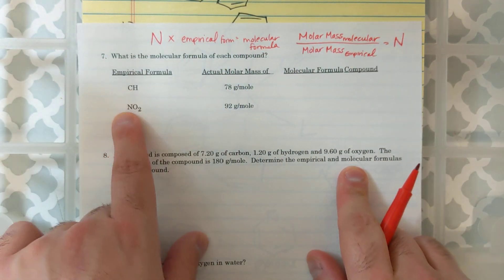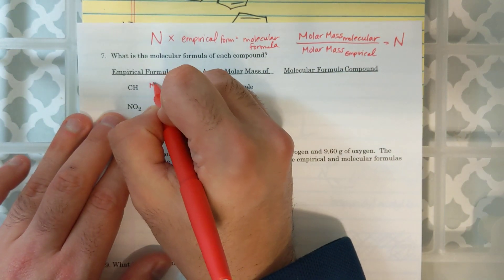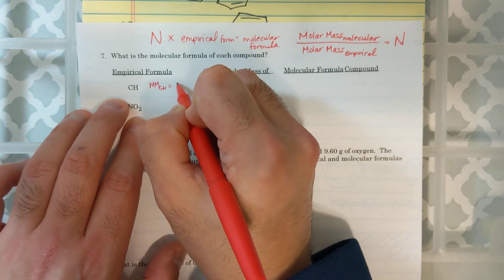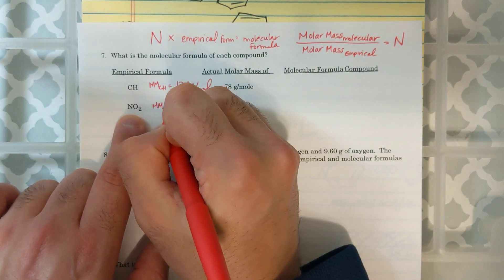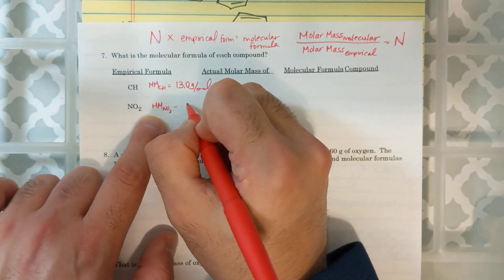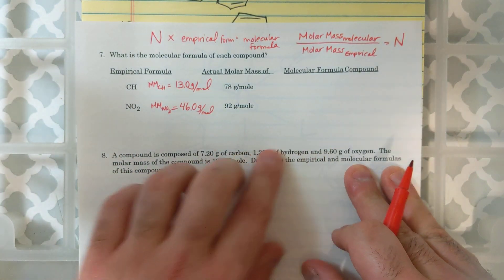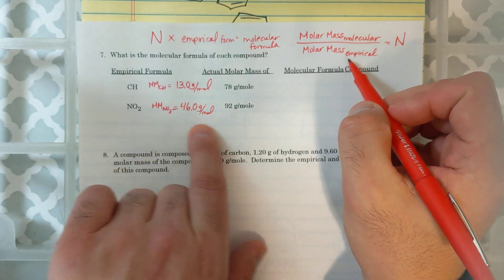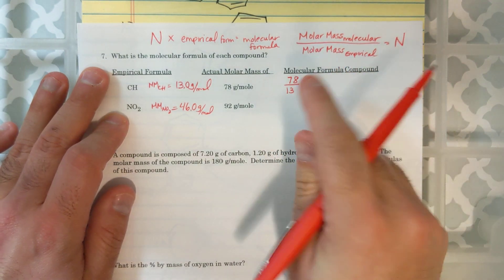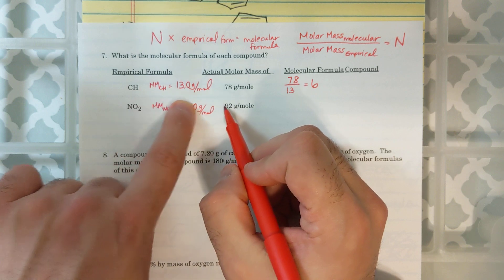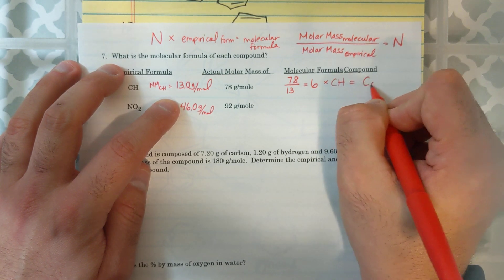And remember, an empirical formula is the simplest ratio of atoms. So, CH is 1 to 1, NO2 is 1 to 2. The molar mass, you should always get the molar mass of your empirical formula. The molar mass of CH is 13 grams per mole. The molar mass of NO2, if you look on the periodic table and add up one nitrogen and two oxygens, you get 46 grams per mole. And then, if you want to figure out the molecular formula, first of all, let's figure out how much larger my molar mass is than my empirical formula. So, I'm going to do 78 divided by 13, that's about 6. This means that my empirical formula must be multiplied by 6 to get the actual molar mass. So, 6 times CH is C6H6.